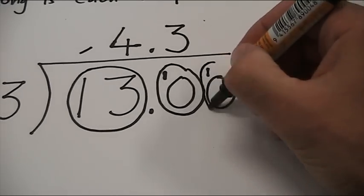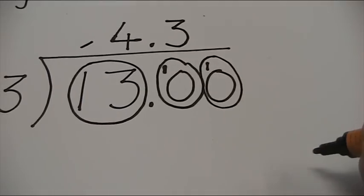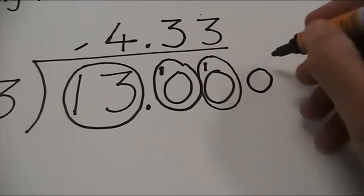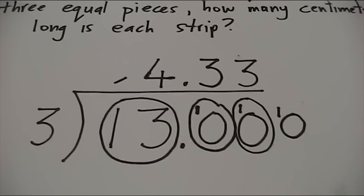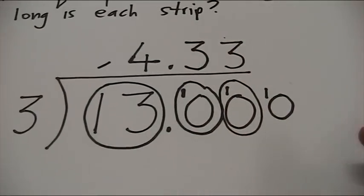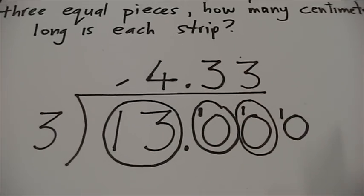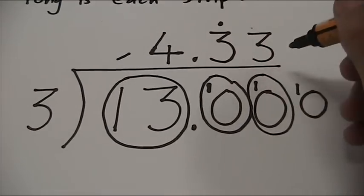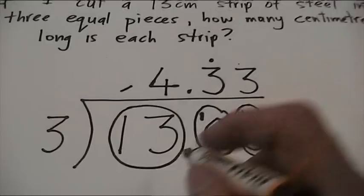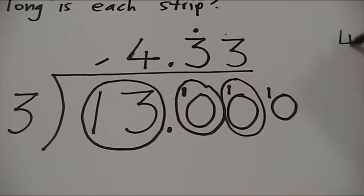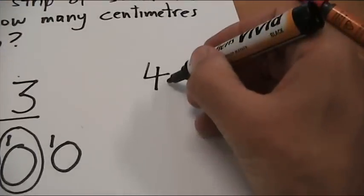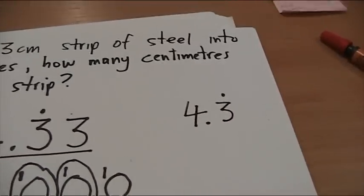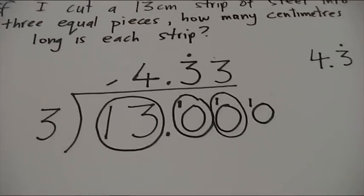And we're going to have to do that again. Three into 10 goes three times with one left over. It's just going to keep happening, isn't it? So this is going to reoccur. So to show that that is happening, you can just put a dot above the first three, and your answer to three into 13 will be four, I'll write it over here, point three recurring, because that three will just keep going on and on and on. There we go.